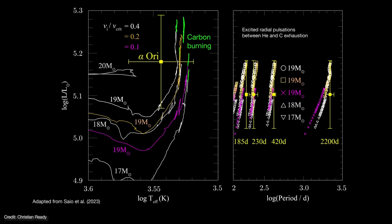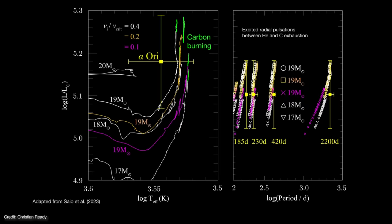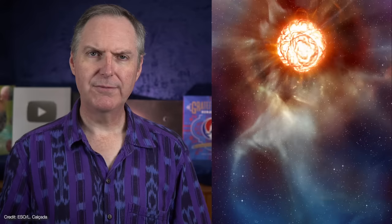Sayo's team found that the overall best fits were that of a star that started out with a mass of 19 solar masses, initially rotating at either 20% or 40% of its critical velocity, and is now fusing carbon in the core. So if Betelgeuse is really fusing carbon, how long will it be before it goes boom?